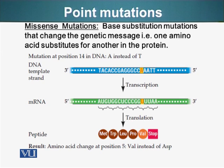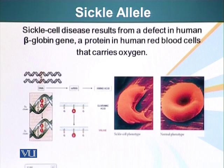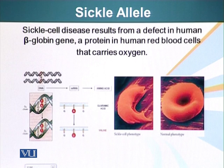Even a single nucleotide change can have dramatic, drastic effects on the physiology of the cell and of the organism hosting that particular change. For example, in sickle cell anemia, the messenger RNA coding for glutamic acid at a particular position is changed to valine.